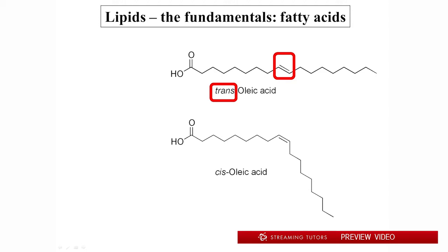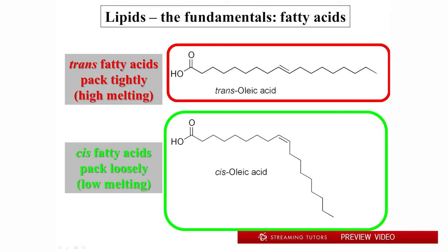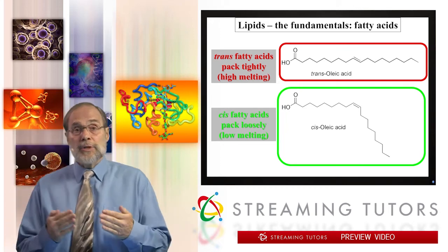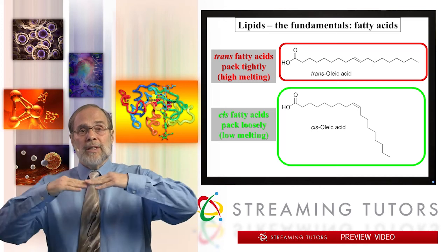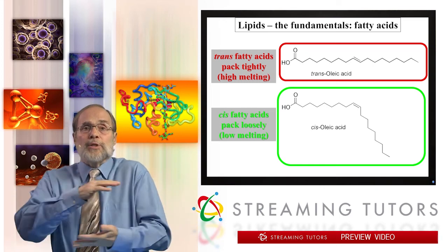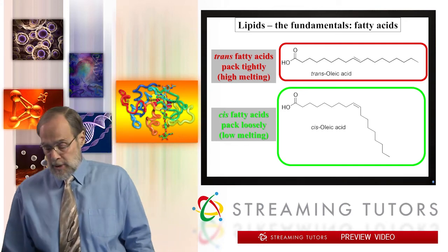In the trans configuration, when the fatty acid side chain comes into a double bond on one side and exits on the opposite side, it preserves the linear structure of the alkane chain. In the cis configuration, when the chain enters and exits on the same side of the double bond, it produces a kink in the side chain. That's a huge difference. Linear side chains pack together tightly, forming strong van der Waals and hydrophobic interactions, and tend to be high-melting. Cis-kinked fatty acids don't pack as efficiently and melt at much lower temperatures.